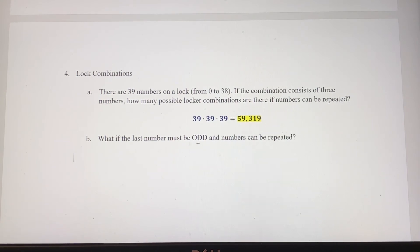Now this last one, though, what if the last number must be odd? And numbers can be repeated. So for the first two options, we've still got 39. But for the last one, it must be odd. So between 0 and 38, 19 of those numbers are going to be odd. So we've got 19 possibilities in the last spot there. And that gives us a total of 28,899.